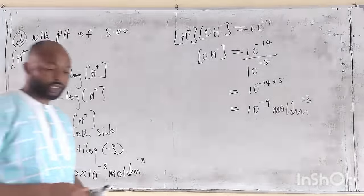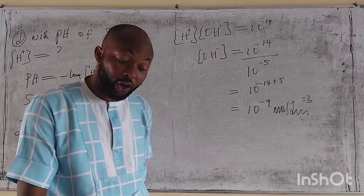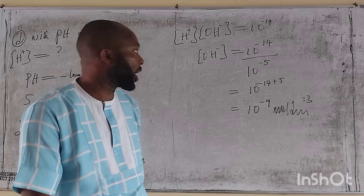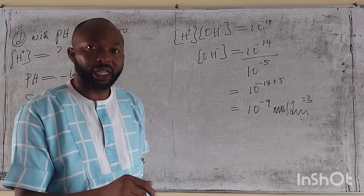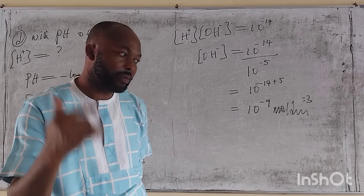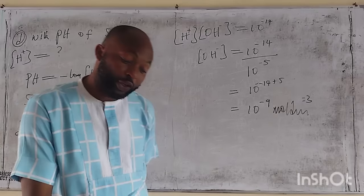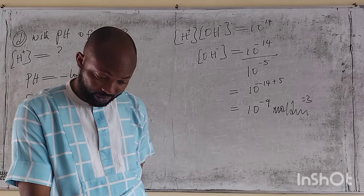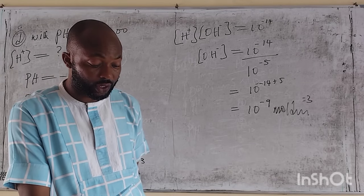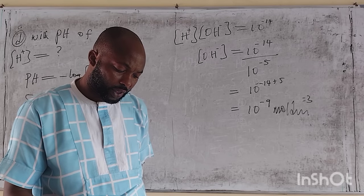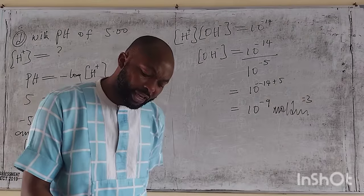For when the pH is 1.55, we should find the hydrogen ion and hydroxide ion concentrations — that will be your assignment test. Question number 8: what is the pH of a solution whose hydrogen ion concentration is 3.2 times 10 raised to minus 4 mol per dm³? That is test number 2.